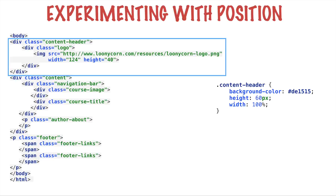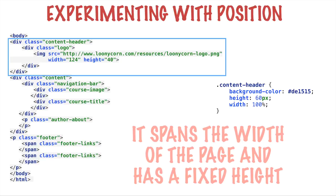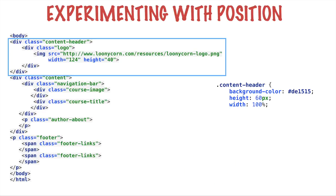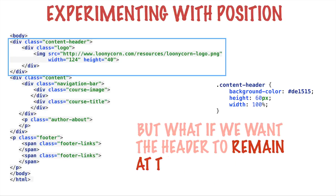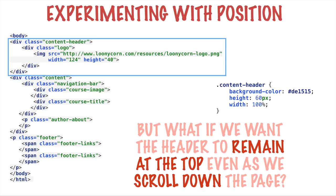The CSS basically says the header has a specific background color. It has a fixed height and it spans the width of the entire browser, which is specified by width: 100%. Width: 100% basically means whatever the size of the browser window, expand this element to fill the entire width. This little bit of HTML added to the very top of all the other elements is enough to get a header strip at the very top of our web page.